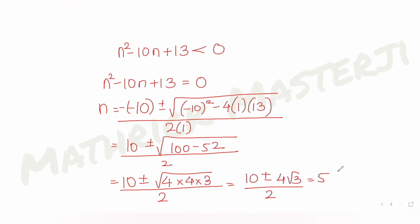Root 48 I can write that as 4 into 4 into 3 over 2. From here you get 10 plus minus 4 root 3 over 2. If I split this, I get that as 5 plus minus 2 root 3. I want it to become less than 0, so n should belong to all the values between 5 minus 2 root 3 and 5 plus 2 root 3.